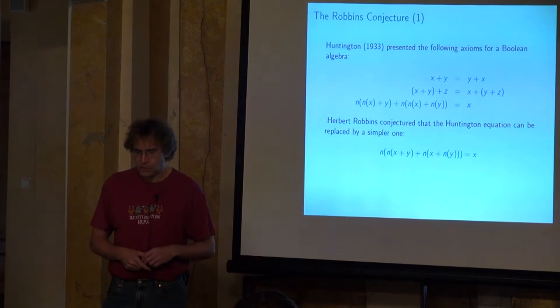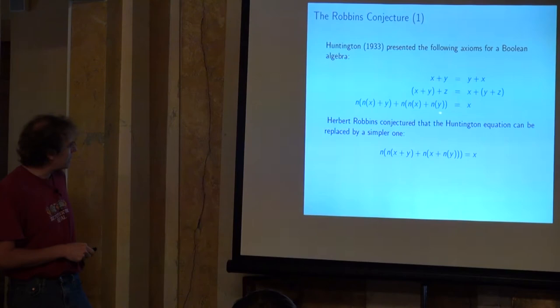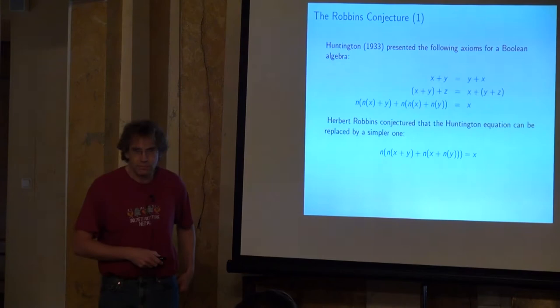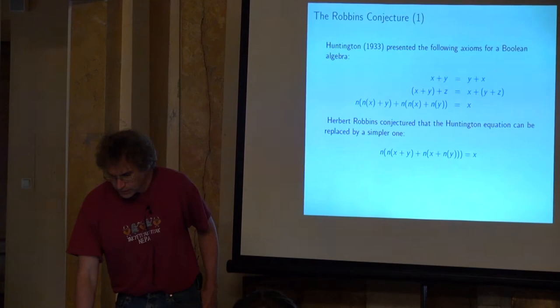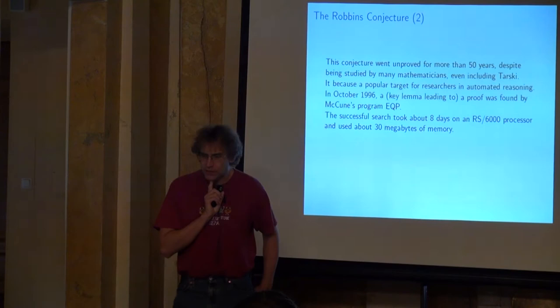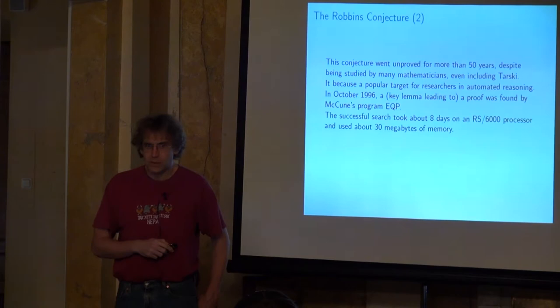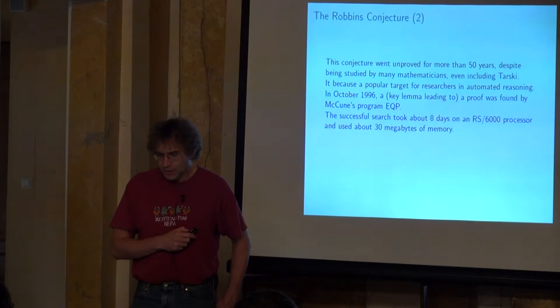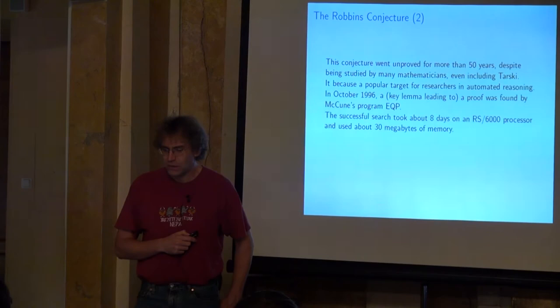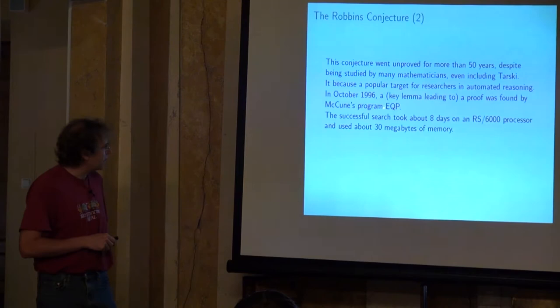Herbert Robbins conjectured that you could replace Huntington's negation axiom with a different one and get the same algebraic theory — in other words, those two sets of axioms had the same algebraic theory. This was an unproved conjecture for over 50 years, and some quite serious mathematicians, including Tarski, thought about this problem. Because it's just equational reasoning, it became a popular target for automated reasoning, and in 1996...